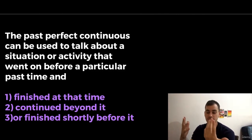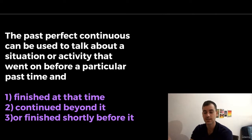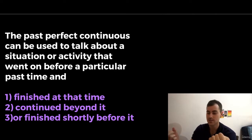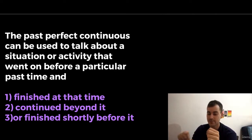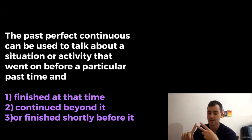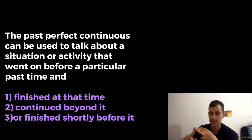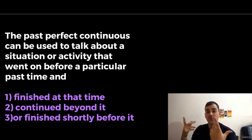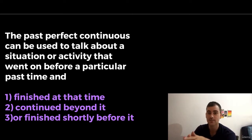This is a restatement of the basic rules we already learned: the past perfect continuous can be used to talk about a situation or activity that went on before a particular past time and finished at that time, continued beyond it, or finished shortly before it. I just want to review and emphasize that for the next rules.